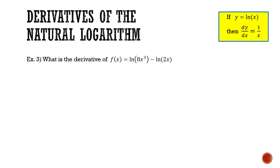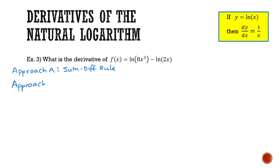Example 3: what is the derivative of f of x equals ln of 8x cubed minus ln of 2x? Again we don't have our expression in the form ln of x, so we need some manipulation. There are two approaches: approach A would be to use the sum difference rule and differentiate ln of 8x cubed and ln of 2x separately — that's perfectly acceptable. The second approach is to simplify by combining the logarithms first and then differentiate, which is the approach I'll use here.